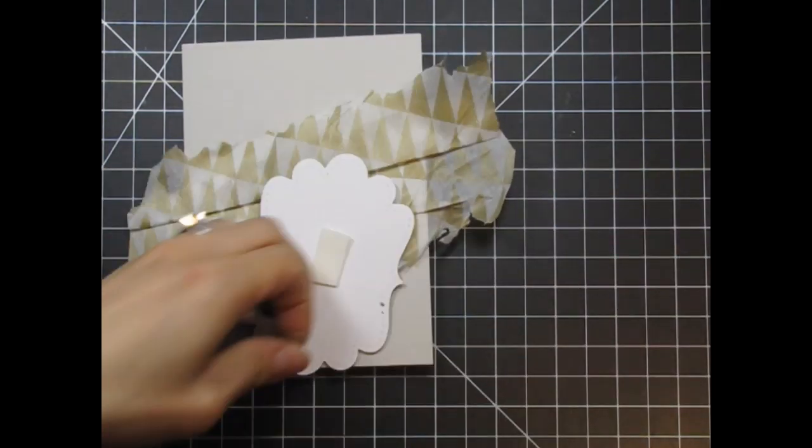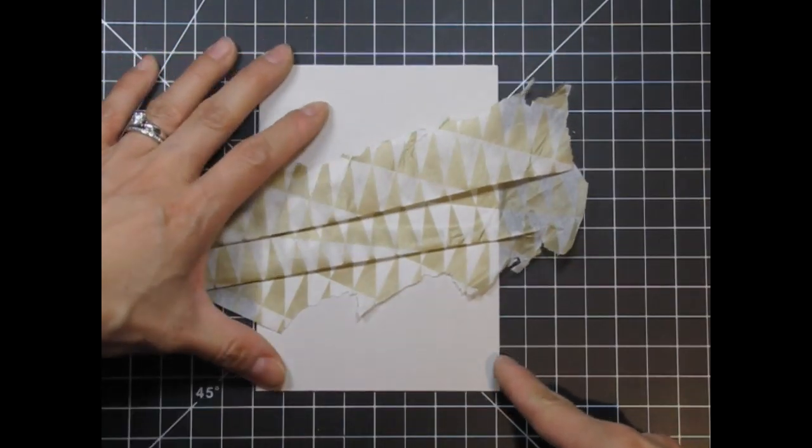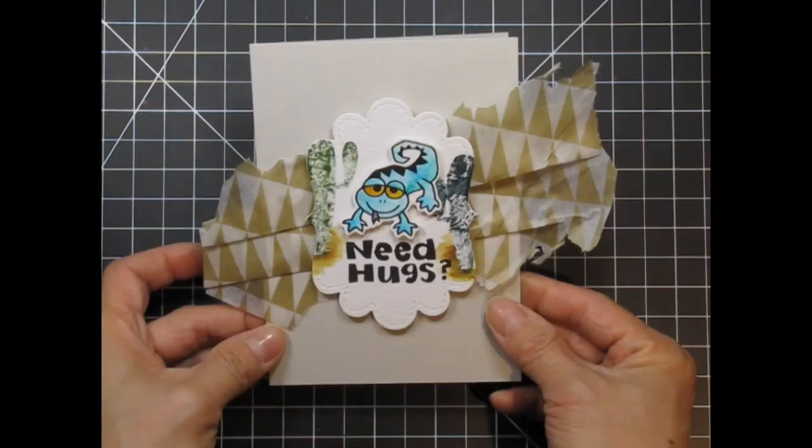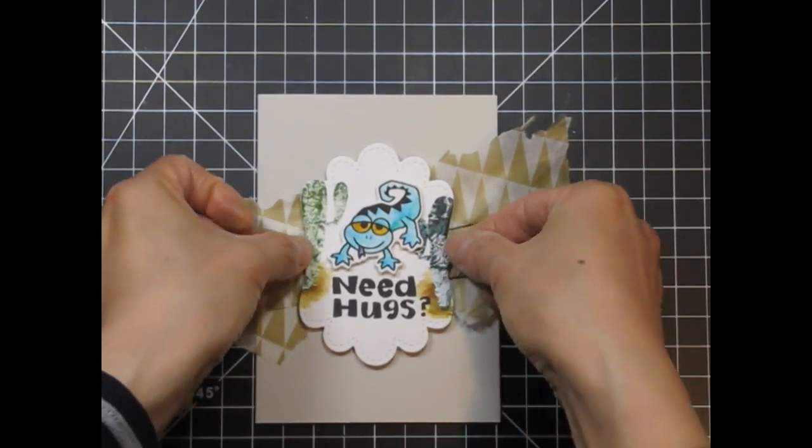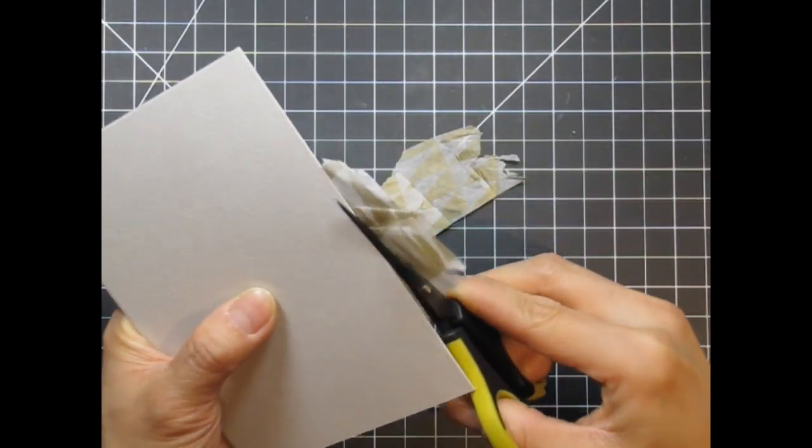After the tissue is adhered to the card base on an angle, I apply foam tape to the Frame 1 panel and attach to the card. Using the grid mat, I make sure that the focal point is centered on the card. When that is finally in place, I can trim off the excess tissue.